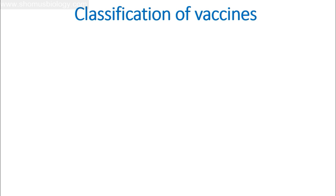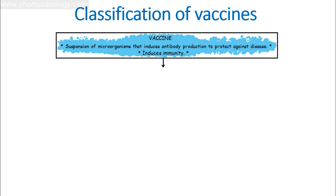First things first is the overall classification of vaccines. In simple terms, a vaccine is a suspension of microorganisms that induces antibody production to protect against disease and induces immunity. Basically, a vaccine is going to improve our immunity because these are microorganisms that can cause infection and disease in us. We ingest a small dosage of inactivated forms of those microorganisms into our bloodstream so that our body's immune system becomes familiar with them.